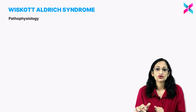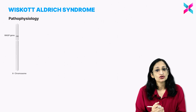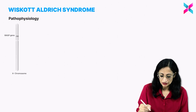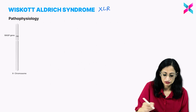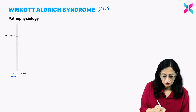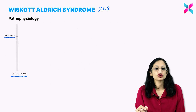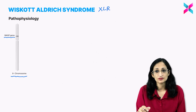First, Wiskott-Aldrich syndrome. Wiskott-Aldrich syndrome has X-linked recessive inheritance because the WAS gene on the X chromosome is mutated, causing the problem.